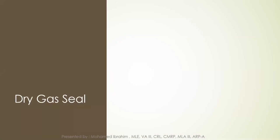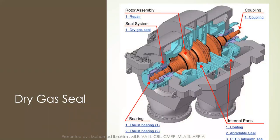Now we get to the dry gas seal, which is our subject for today. This picture shows the location of the mechanical seal in the cross-section of a centrifugal compressor. Here we have the drive end and the non-drive end. We have the location of the dry gas seal on both the drive end side and the non-drive end side, along with the rotor.